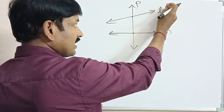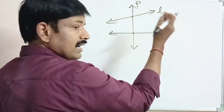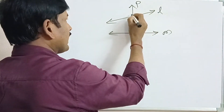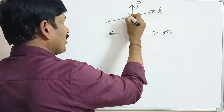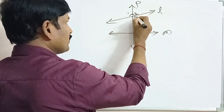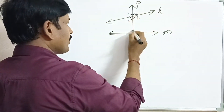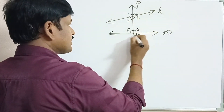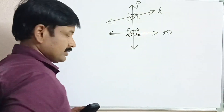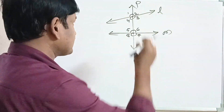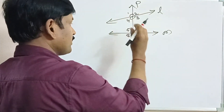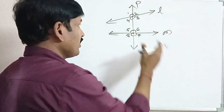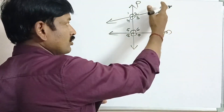Here, P is a transversal to lines L and M. Now there are a total of eight angles formed: angle 1, angle 2, angle 3, angle 4, angle 5, angle 6, angle 7, and angle 8. In each intersection there are four angles formed, so in total there are eight angles formed when a transversal cuts two lines at distinct points.